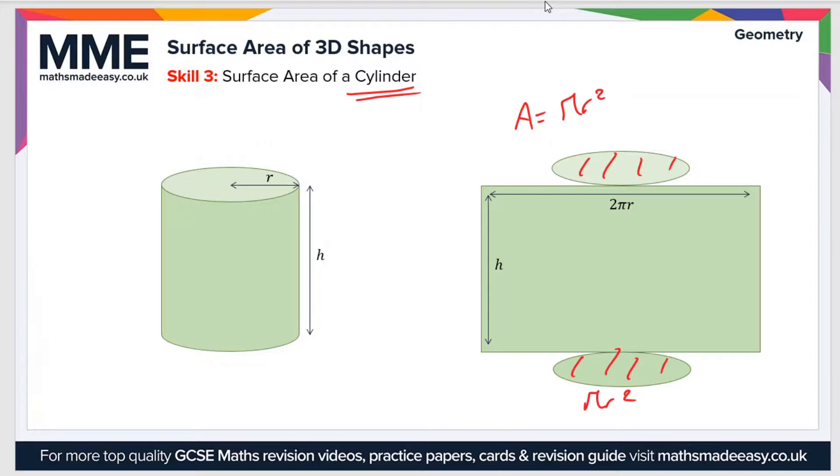The area of the rectangular face which wraps itself around the cylinder you can calculate from the circumference of the circle, because this length here is the same as the circumference of the circle. We know that the circumference of a circle is 2πr, and then to calculate the area of the whole rectangle we multiply by the height.